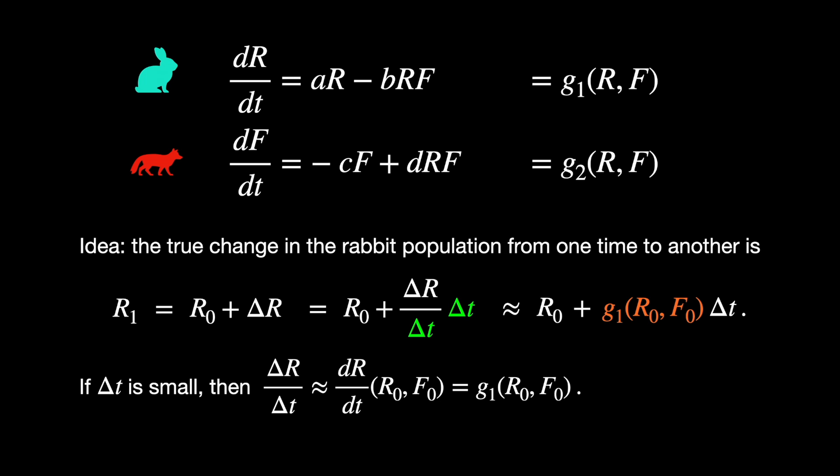I've used subscripts 0 and 1 here to indicate going from an old population to a new population, but we'll just keep building up those subscripts as we keep estimating the change in the populations. So my next approximation could be for R2, F2 and then R3, F3, etc. So now we're ready to state the algorithm.